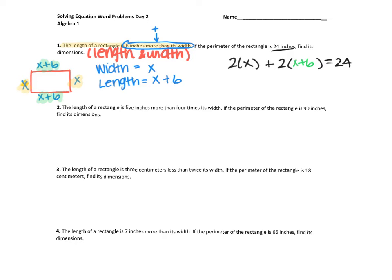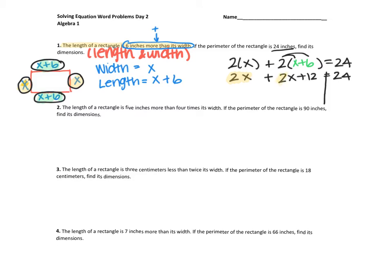And I know that when I add all four sides up, I should get 24 inches. The reason I did two times is because I have two X's, and I did two times (X plus six) because I have two of those. When I simplify, I get two X plus — remember parentheses means to distribute — so that gives two X plus 12 equals 24.